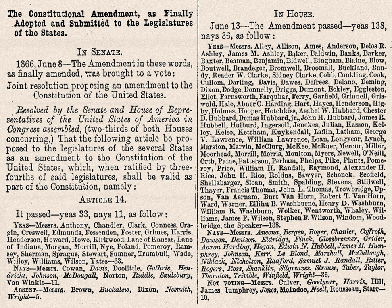Because the full population of freed slaves would now be counted for determining congressional representation, rather than the three-fifths previously mandated by the Three-Fifths Compromise, the southern states would dramatically increase their power in the population-based House of Representatives, regardless of whether the former slaves were allowed to vote. Republicans began looking for a way to offset this advantage. In 1865, Congress passed what would become the Civil Rights Act of 1866, guaranteeing citizenship without regard to race, color, or previous condition of slavery or involuntary servitude.